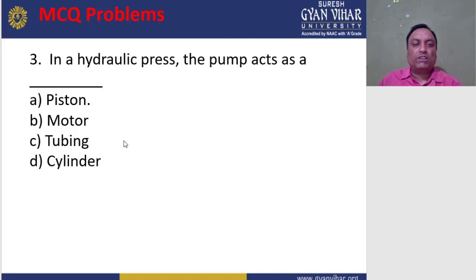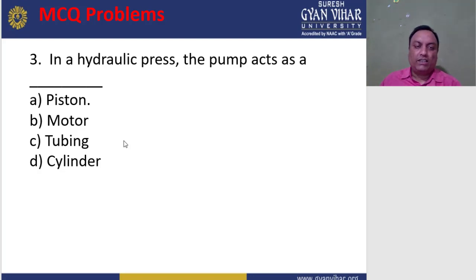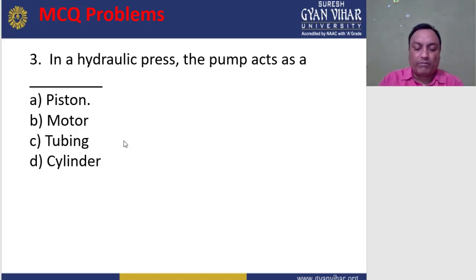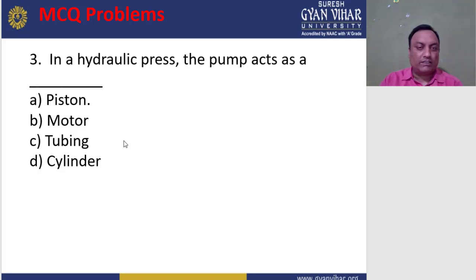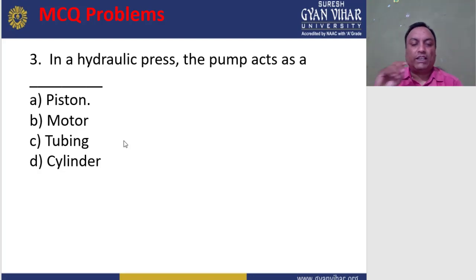Question 3: In the hydraulic press, the pump acts as a — a) piston, b) motor, c) tubing, d) cylinder. In the hydraulic press the pump acts as a piston: it has considerable mechanical force acting on a small cross-sectional area, and the other part of the piston is a large area which delivers a higher mechanical force. The correct answer is a — piston.